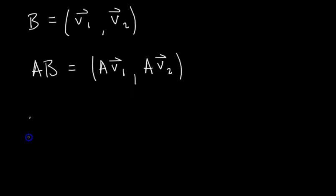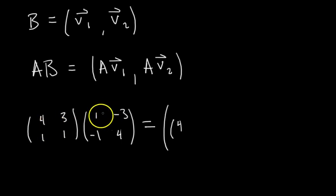I encourage you to practice it this way because I think it'll pay off in the end by saving you a lot of time. So above we had the matrices 4, 3, 1, 1, and 1, negative 3, negative 1, 4. And so when you do this second method, you would have the first column is A times V1.